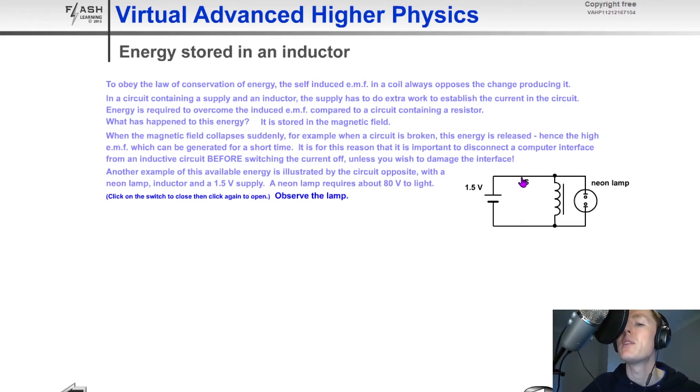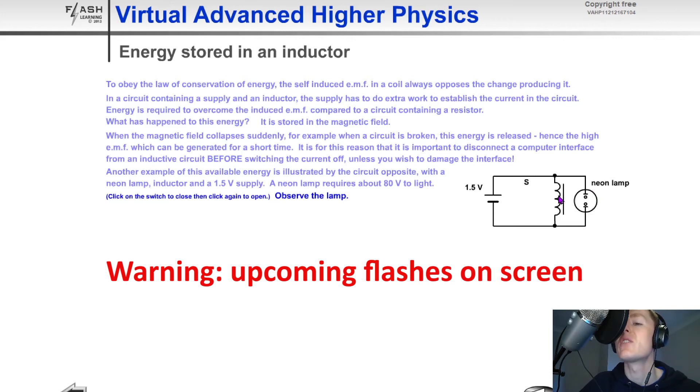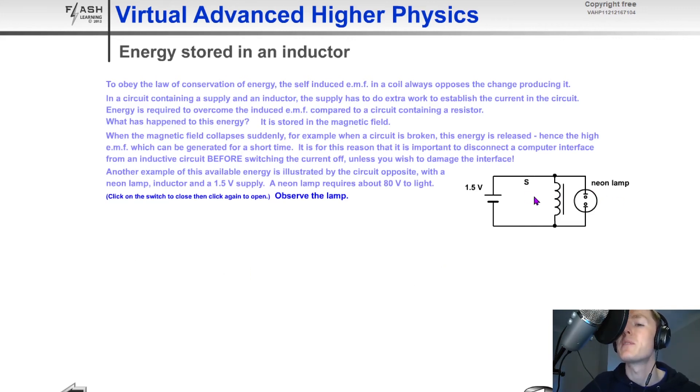However, when we open the switch, there should be a large rate of change of current and the magnetic field around the inductor should rapidly decay, which should release that energy in the form of a large back EMF produced. And this should allow the neon lamp to flash.